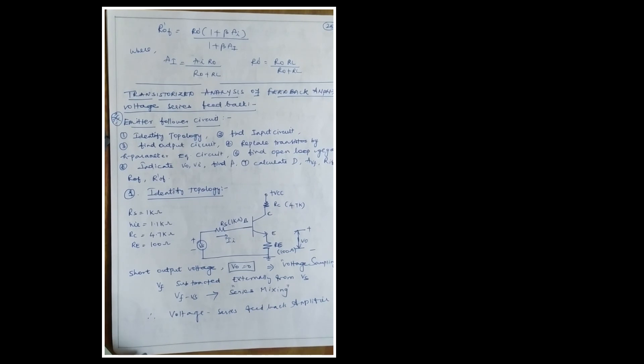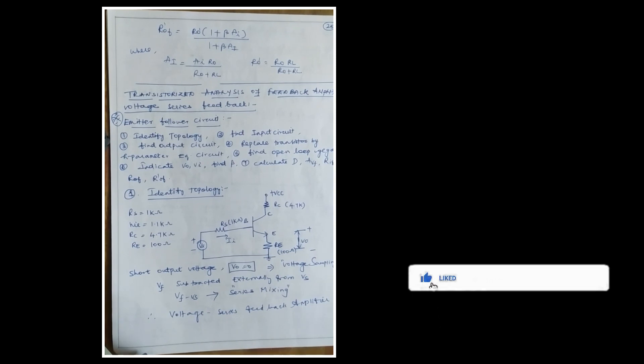Next we are going to study another important question, which is the transistorized analysis. For the transistorized analysis, they will be giving you the emitter follower circuit. First, we are going to see the emitter follower circuit, and then analyze the voltage series feedback amplifier.